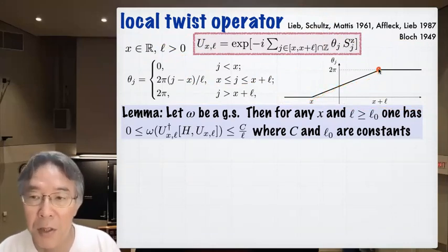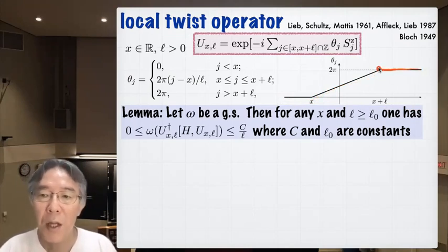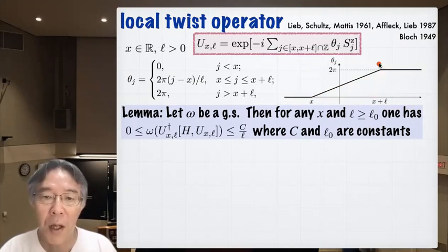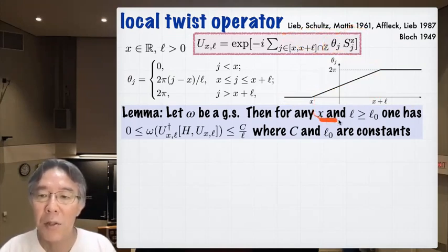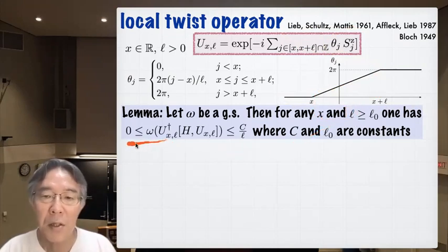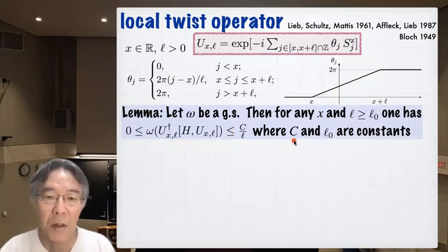Since 2π rotation equals zero rotation, the twist operator acts non-trivially only on a finite portion of the chain. This is a basic lemma due to Lieb-Schultz-Mattis: for any x and sufficiently large l, the expectation value omega(U†[H,U]) is bounded from above by c/l, where c is a constant.